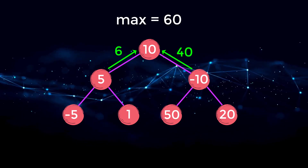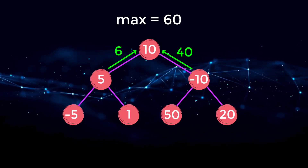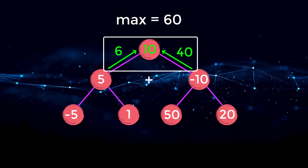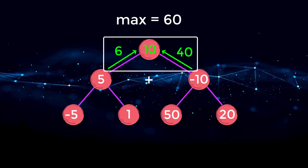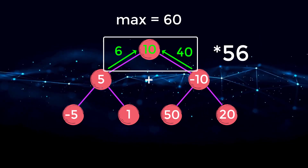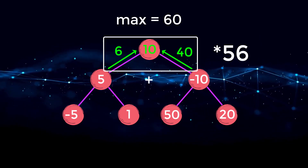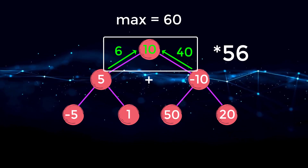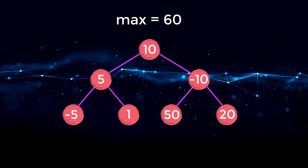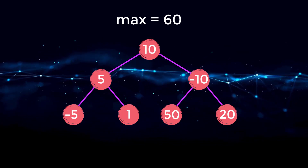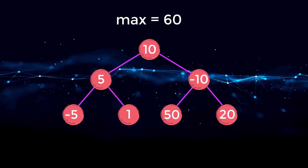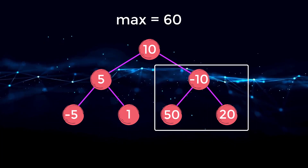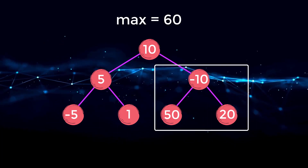Finally, we compute the sum at node 10: left plus right plus current value is 46, and that is not greater than our current max. So by the end of traversing, our max is 60, which corresponds to the correct path.